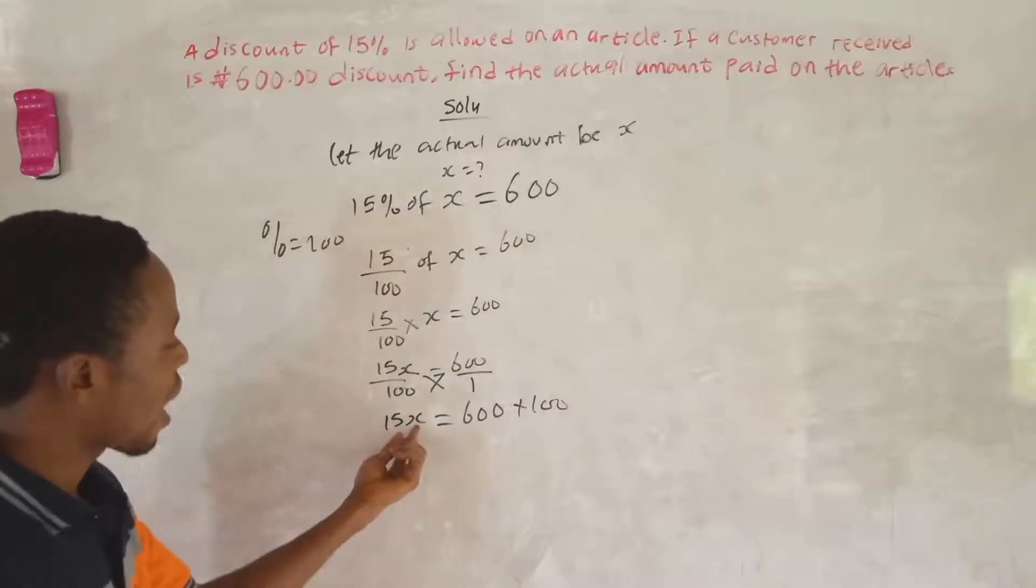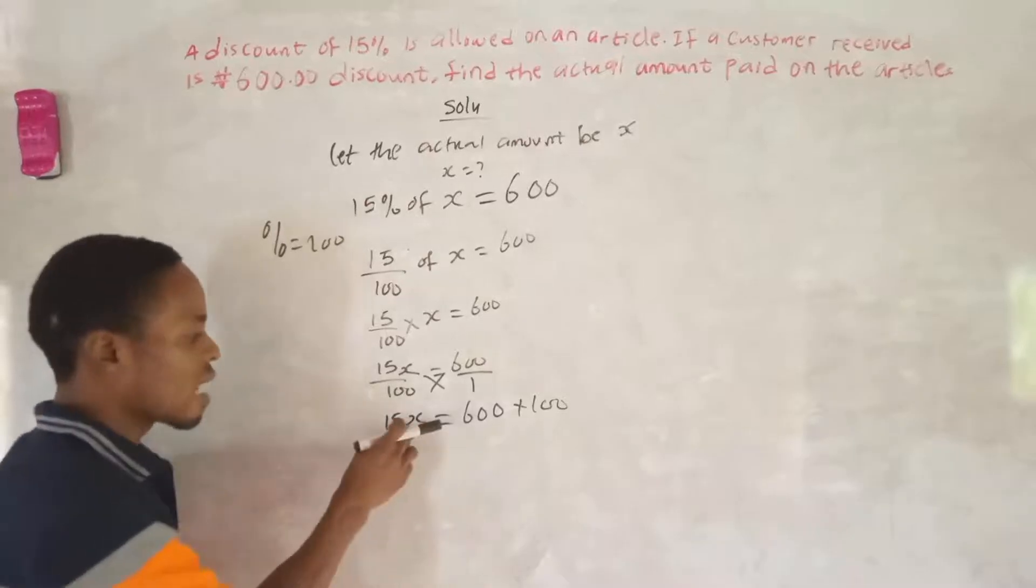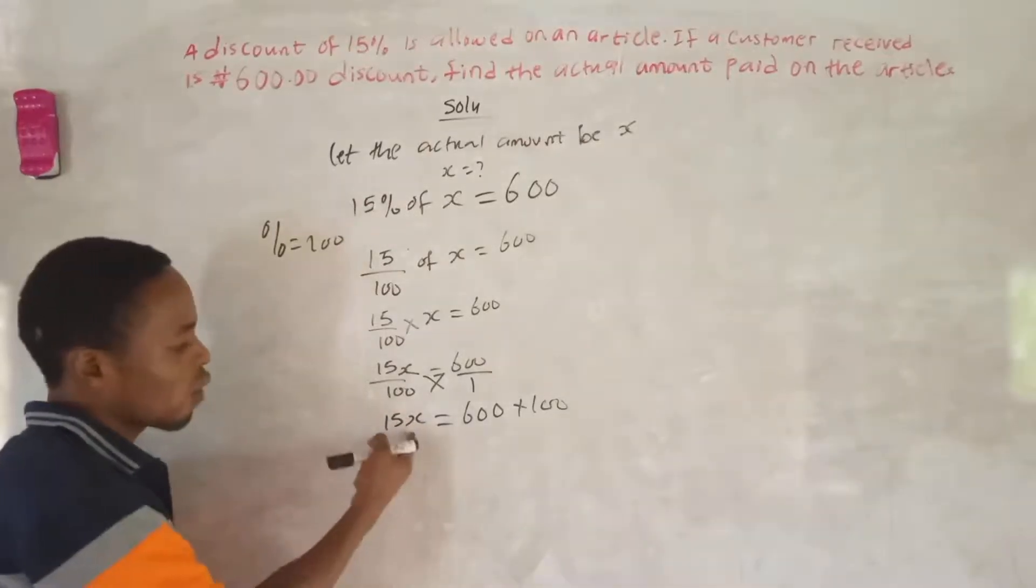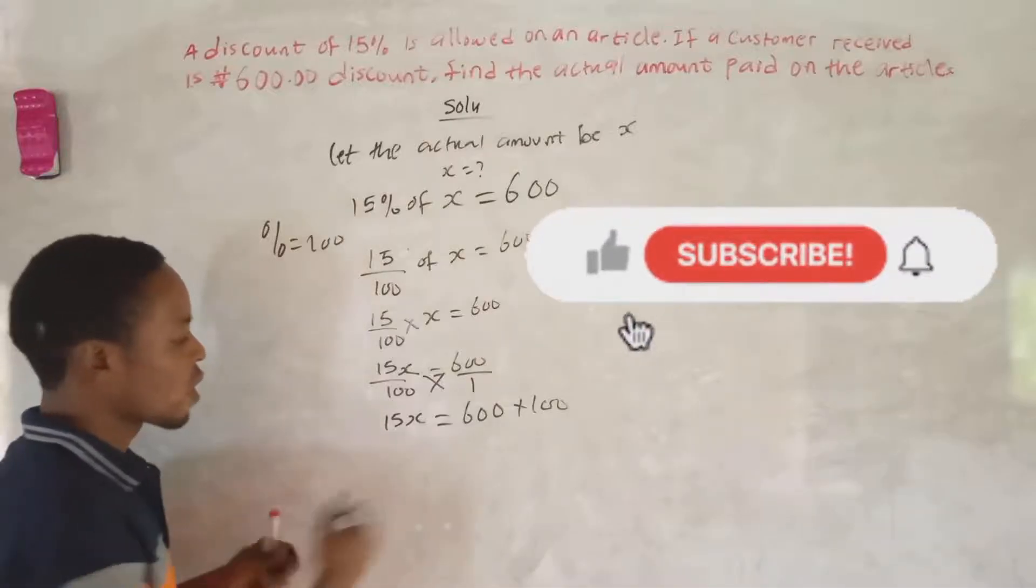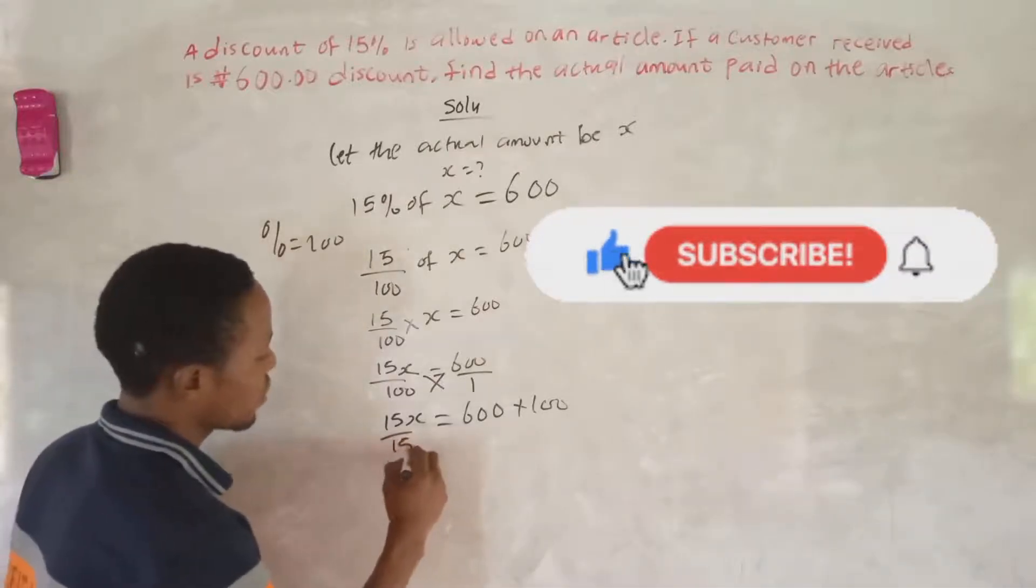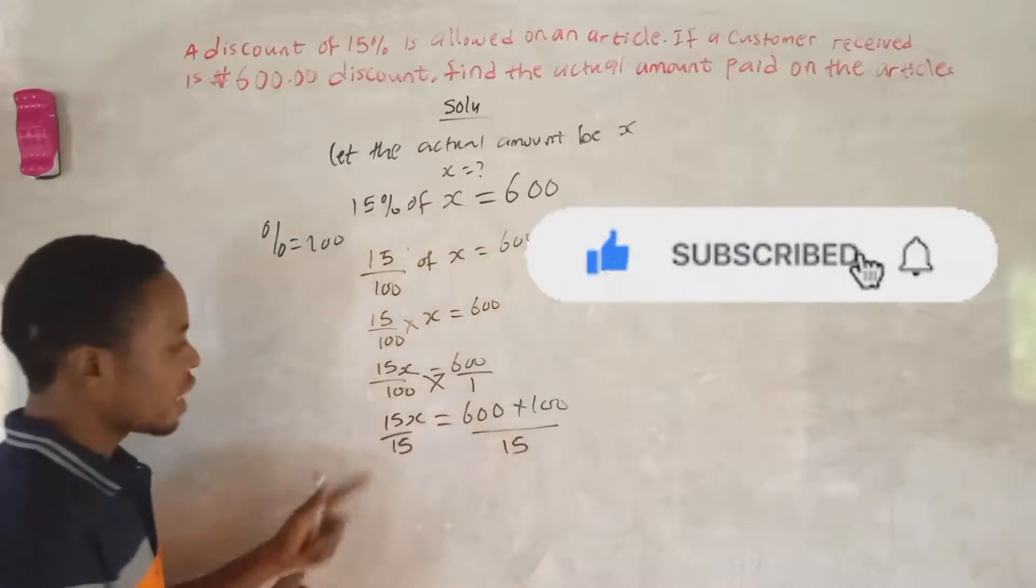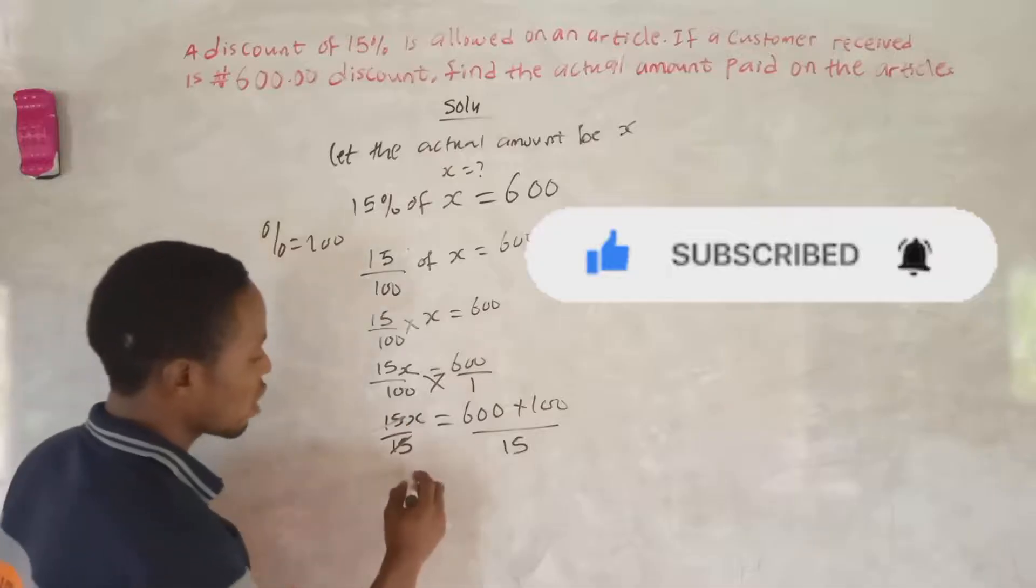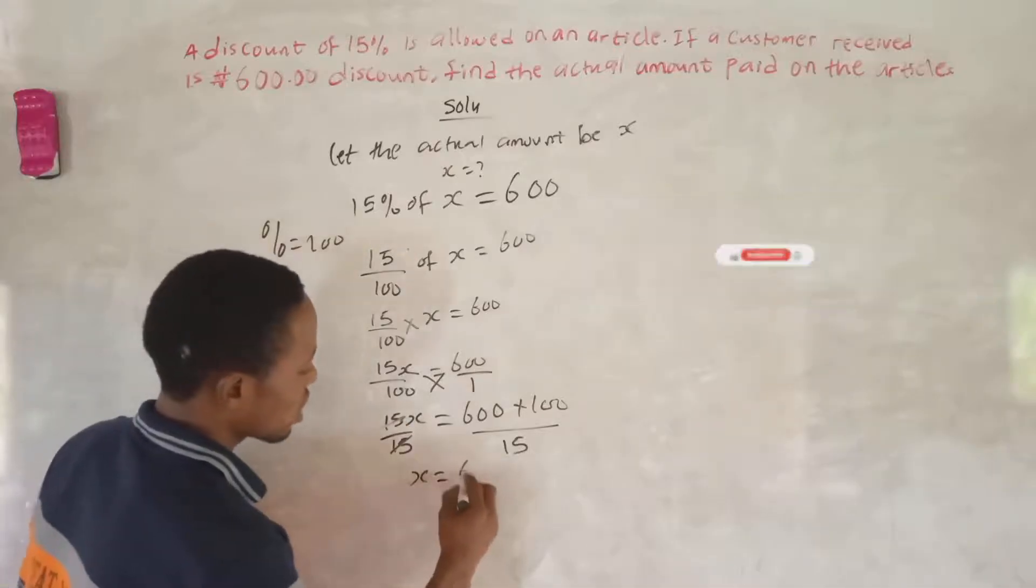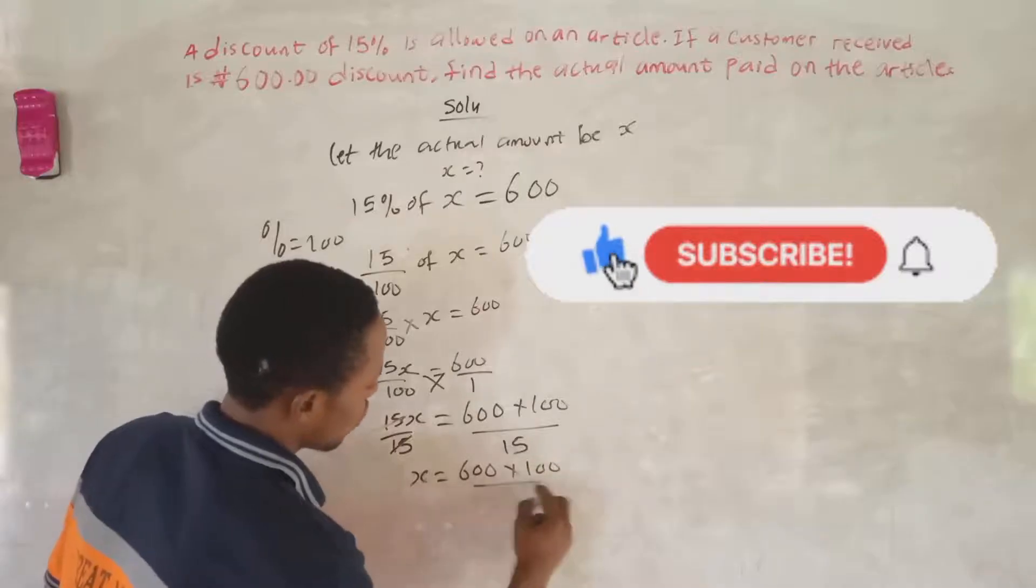Since you are looking for the actual amount, which means S, we want to make S the subject of the formula. Divide both sides by the coefficient of S, which is 15. So S equals 600 multiplied by 100 over 15.